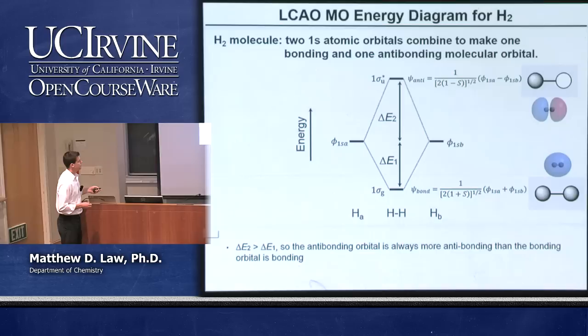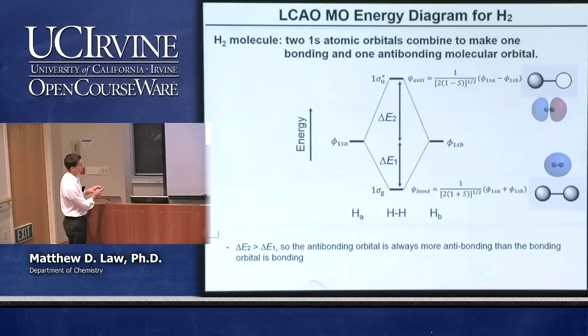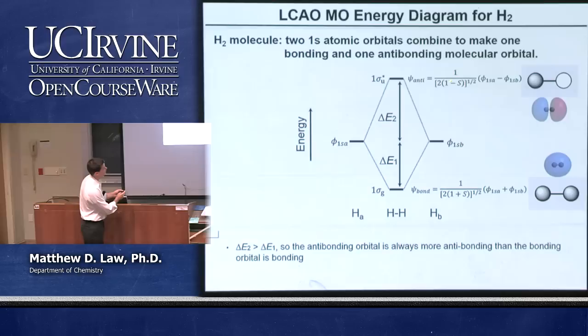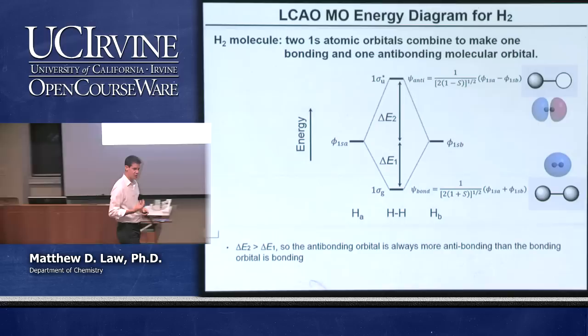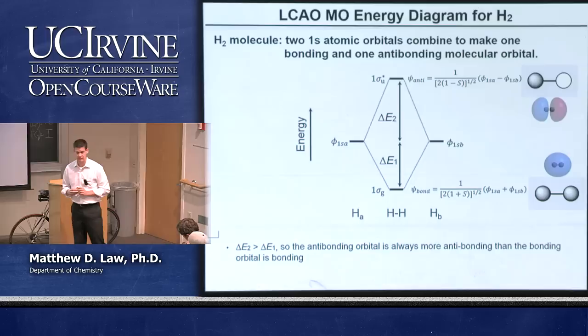The amount of destabilization of the antibonding orbital is larger than the stabilization of the bonding orbital. The energy of the bonding orbital is divided by (1+S), while the antibonding energy is divided by (1−S), so the antibonding difference is always larger than the bonding orbital difference.